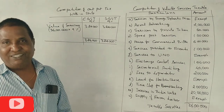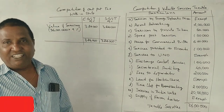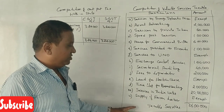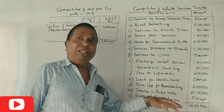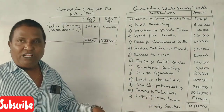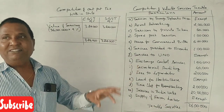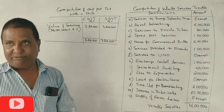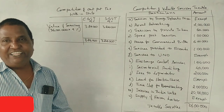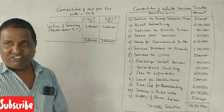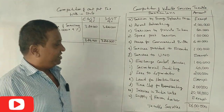Next, supplier of farm labor and agriculture labor supply. This attracts GST — it is a taxable service.